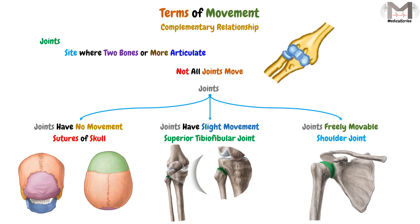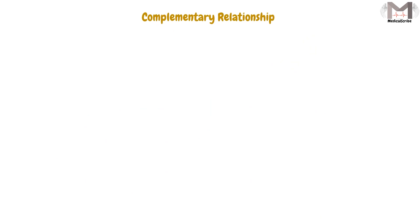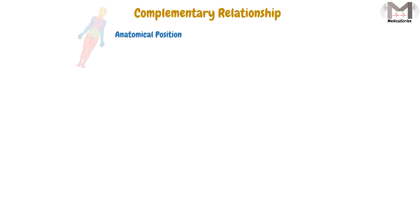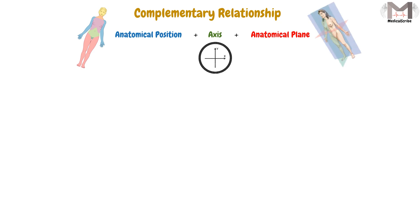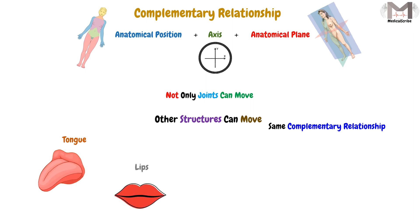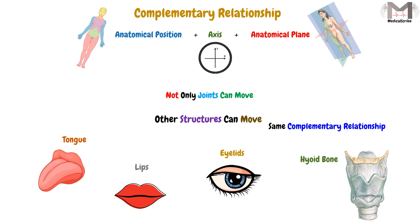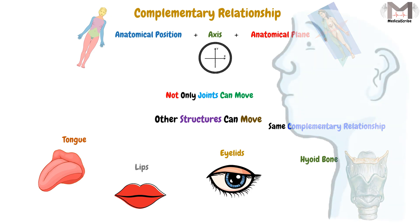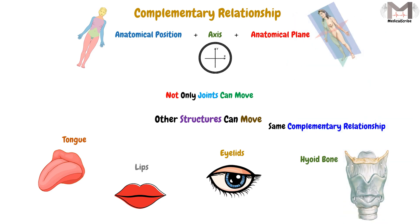Now let's move forward and arrange what we said. The complementary relationship that combines the anatomical position with the axis and anatomical plane of a structure is mostly seen in the joints. But importantly, not only joints can move — there are structures other than joints that can move as well, and they need the same complementary relationship. For example, we have the tongue, the lips, the eyelids, and the hyoid bone, which is the bone found in the neck. All these structures will move according to the complementary relationship essential to perform their movement well.